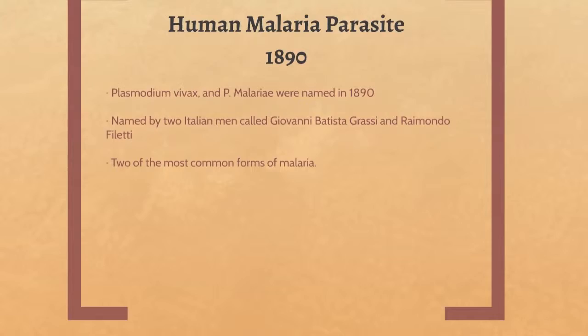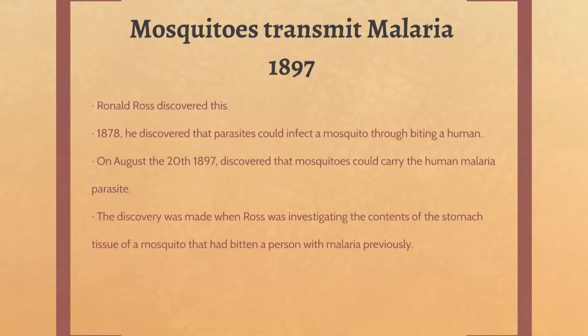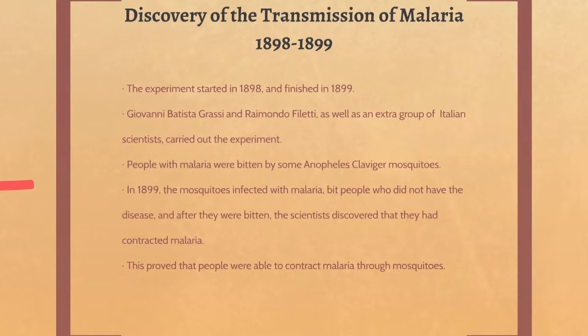The discovery that mosquitoes transmit malaria was made by Ronald Ross. He discovered that mosquitoes contracted malaria from biting infected humans. Ross set up an experiment to prove his theory and discovered that malaria could be carried and passed on to humans through the bite of a mosquito, found while examining the stomach tissue of a mosquito. The transmission of malaria was also confirmed by a group of Italian scientists, who set up an experiment where mosquitoes bit malaria patients and then, days later, bit patients without malaria. The latter group soon developed malaria symptoms.